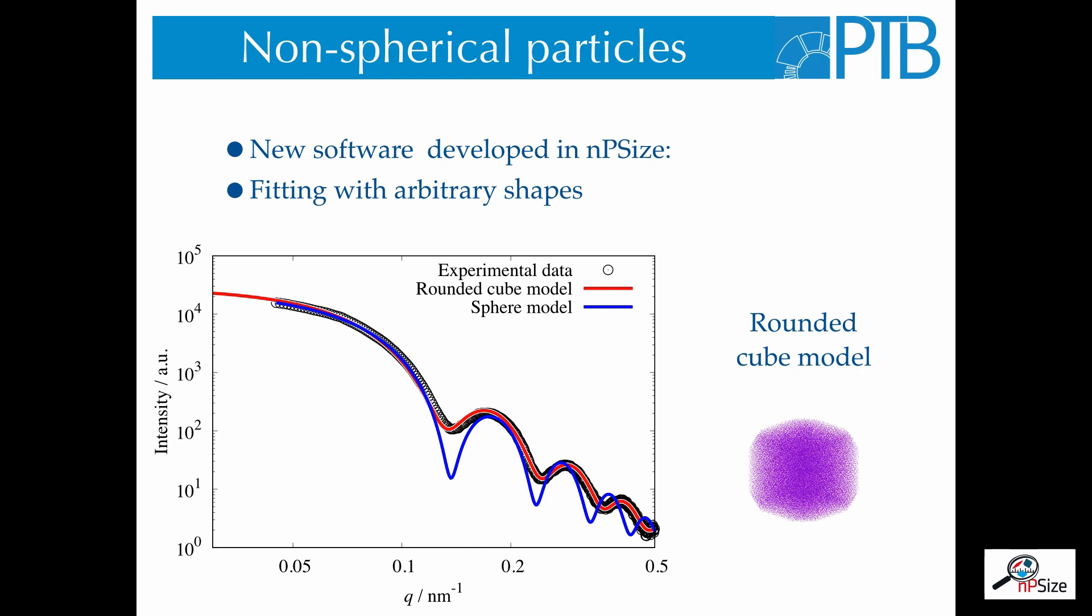The blue line shows how a spherical model would fit to the data. As you can see, the maxima of the sphere do not fit to the measured features of the experimental data. So, in NP-size, we developed a new software that allows us to fit arbitrarily shaped particles. The red curve is a simulation of a rounded cube model that is a cube with rounded corners fitted to the experimental data. With this software, we are also able to evaluate the scattering curve from the arbitrary shapes.